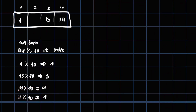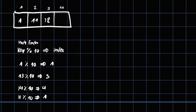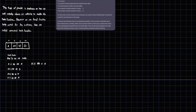Extending the example: suppose we also have 12 stored somewhere, and we want to add 21. 21 % 10 = 1, but index 1 is taken, index 2 is taken, index 3 is taken — so we skip to index 4... wait, also taken — so we continue until we find a free slot and write 21 there. That's basically how linear probing works.